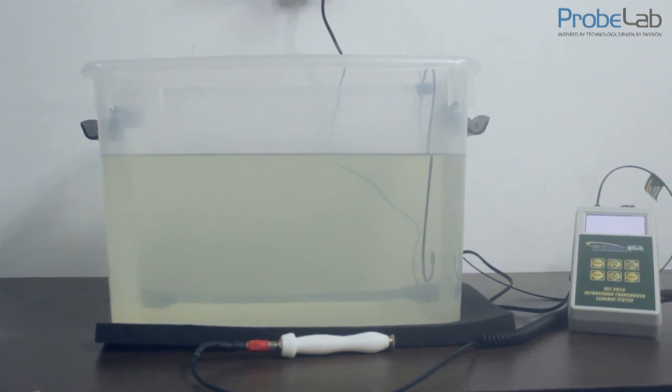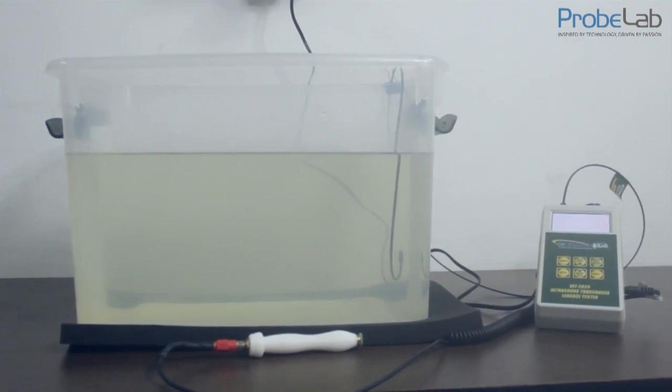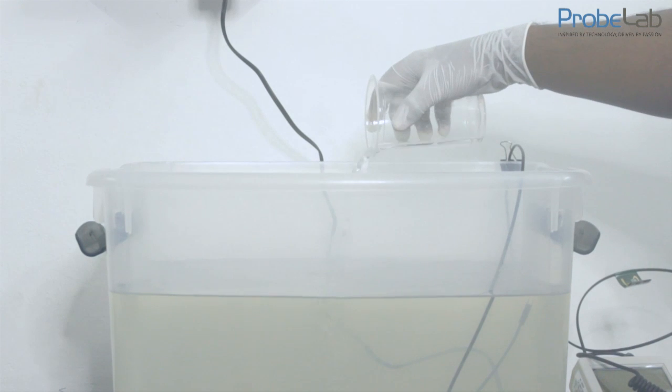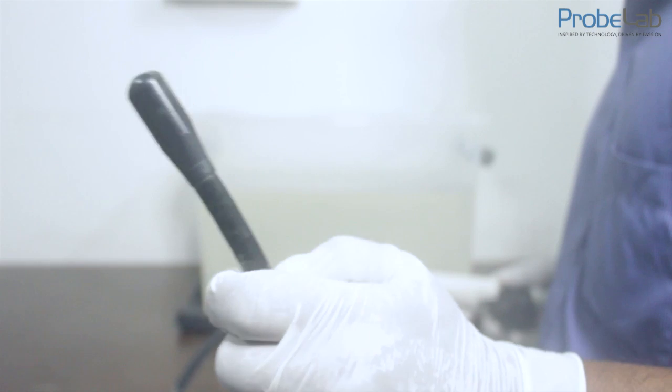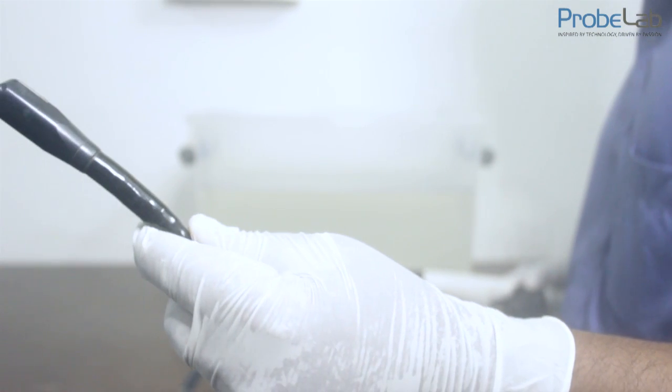This video is about the leakage test of a TE probe. First, add the appropriate amount of saline solution to the water for conductivity. This is the TE probe which we will conduct the leakage test on.